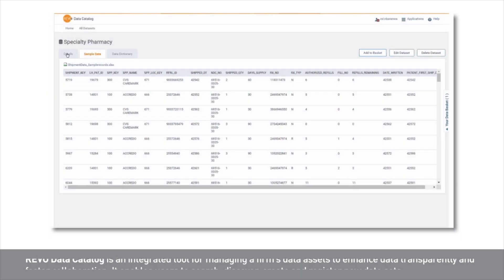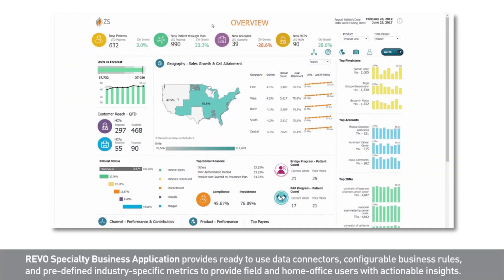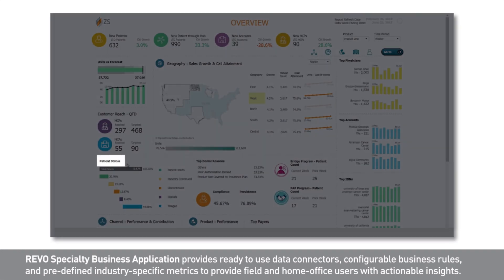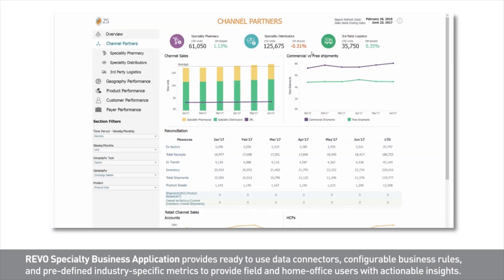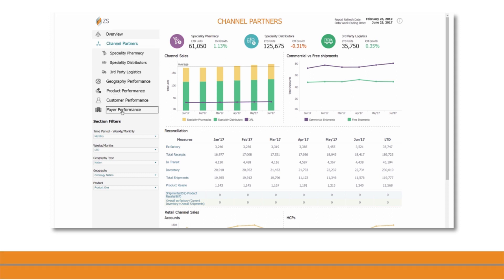Now let's look at our pre-configured Revo Specialty Business Application for the home office, which informs me about every aspect of my specialty product including customer reach, geography, sales, patient status, top denial reasons, and other aspects. We can even take a deeper look — for example, at our channel partners — to analyze how our shipments match market demands. These and many other reports and insights are available to our users out of the box.